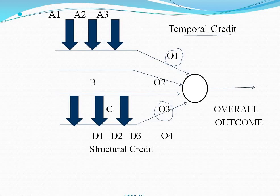To get the outcome for the first internal decision, the actions required are A1, A2, and A3. Similarly, for the second internal decision outcome, actions B1, B2, and B3 may be required. For the third internal decision outcome, actions C1, C2, and C3 are involved. For the fourth outcome, actions D1, D2, and D3 are performed. Some internal actions are performed to get the output for each internal decision.